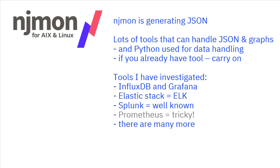So we're going to get the data into JSON format. There are lots of tools that can handle JSON and perhaps even graph it — you could use Python for data manipulation and graphing. If you already have that plumbing, just pull in the new data from njmon and off you go. The particular tools I've looked at as examples include InfluxDB and Grafana, the Elastic Stack (sometimes called ELK or Elasticsearch), Splunk, and Prometheus — though I put Prometheus down as tricky. Prometheus likes to have a central machine that pulls data from virtual machines, where njmon does it the other way around — an agent that pushes data into the database.